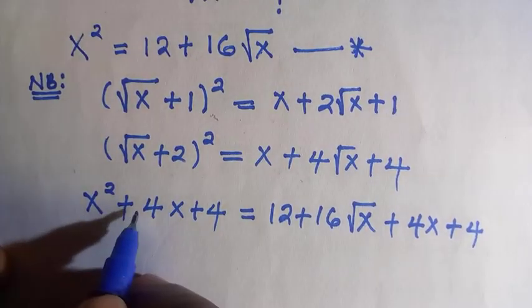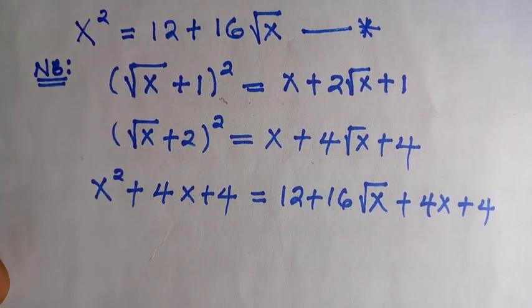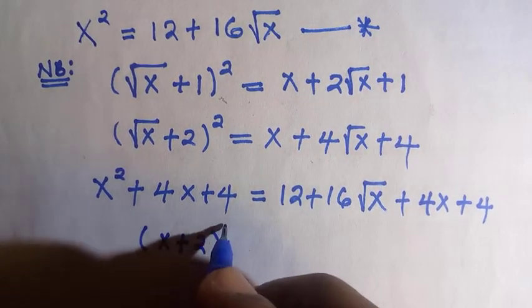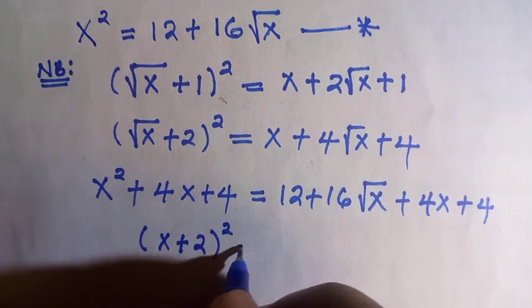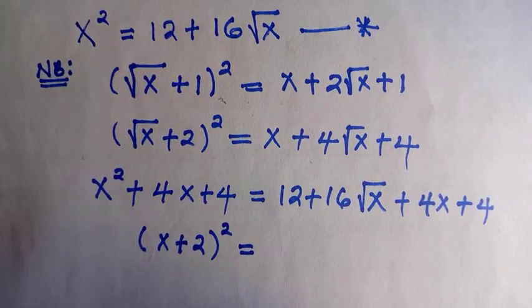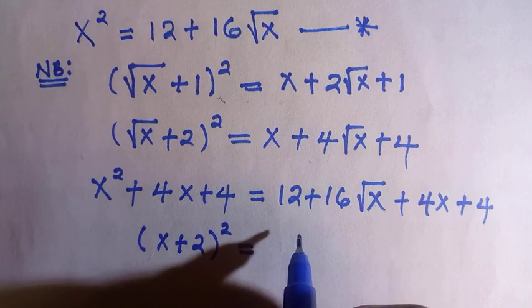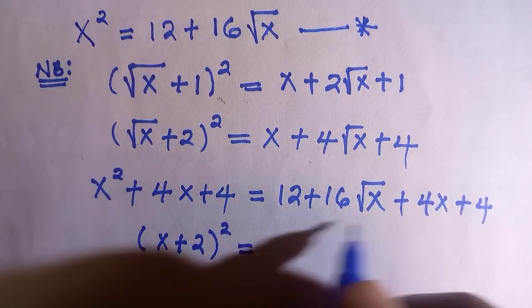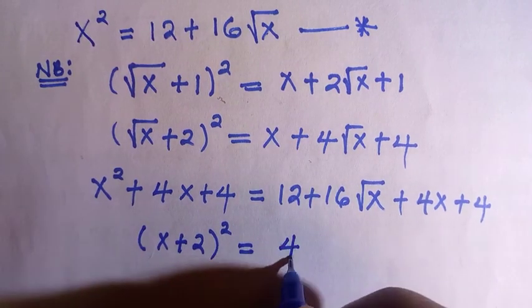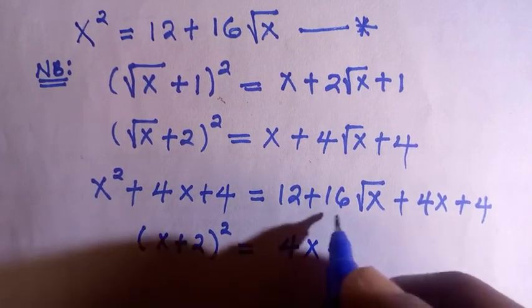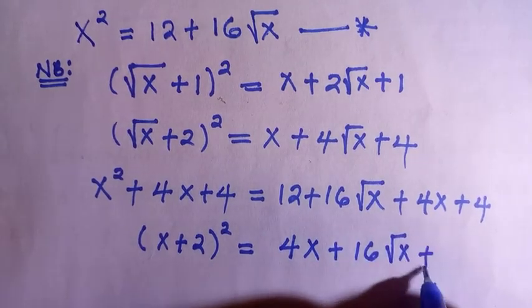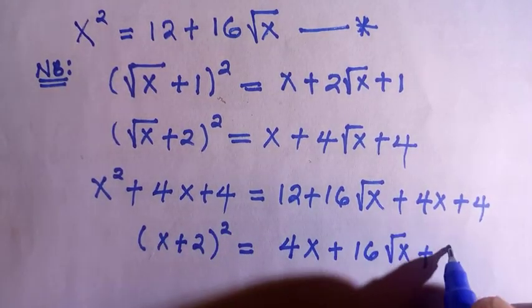Fortunately, x² + 4x + 4 gives us (x + 2)² equals, and for this one, if I do the rearrangement and add the constants together, starting with 4x + 16√x + 12 + 4, which is 16.